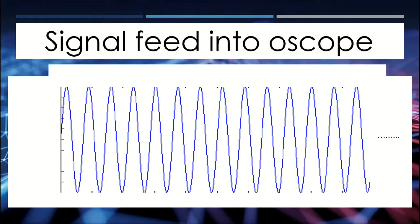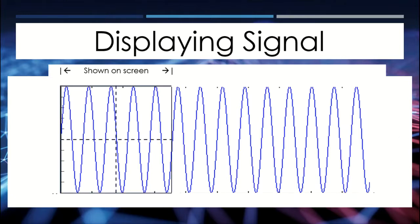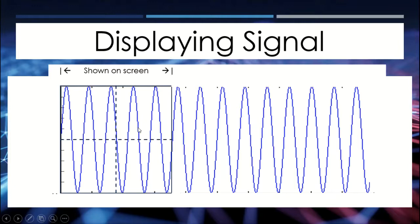It is totally impossible for your oscilloscope to display an infinite amount of data on the screen all at once. Because of that, the oscilloscope grabs a portion of that information and shows it on the screen — this square box represents what you would see on the oscilloscope screen. Now, what if that signal changes? For example, if it was a 1 kHz signal and it became a 2 kHz signal, you don't want to keep looking at the old information.